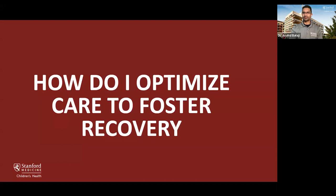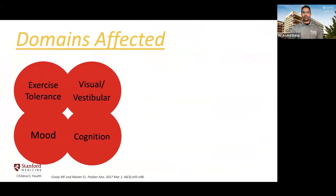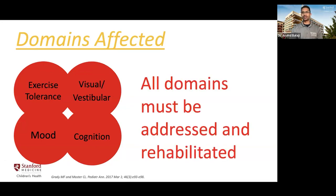To optimize care and foster recovery, we can conceptualize several neurologic domains commonly affected in concussion patients of all ages, particularly pediatric patients. These include exercise intolerance, visual and vestibular abnormalities, cognition, and mood. Each domain must be individually addressed and rehabilitated before patients can be considered recovered and returned to their activities.